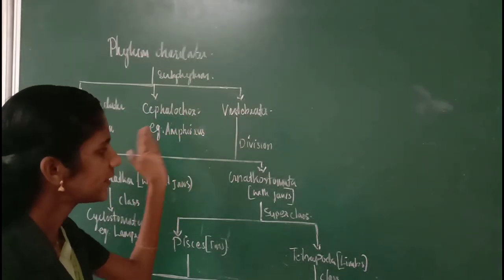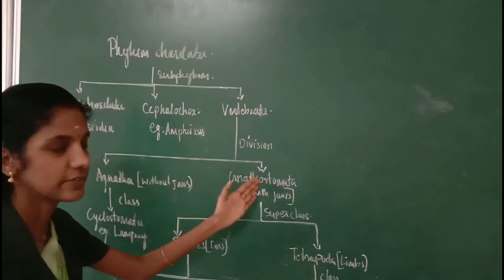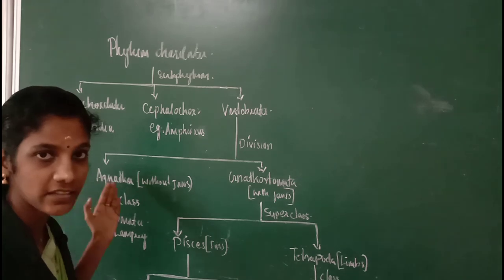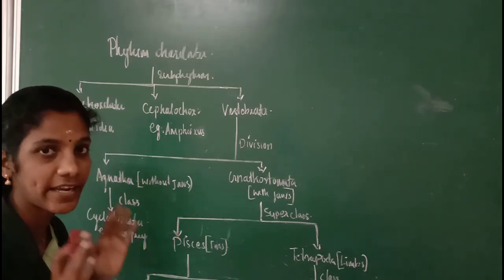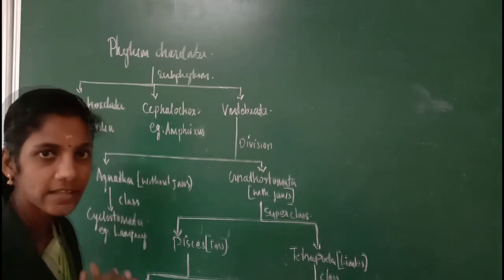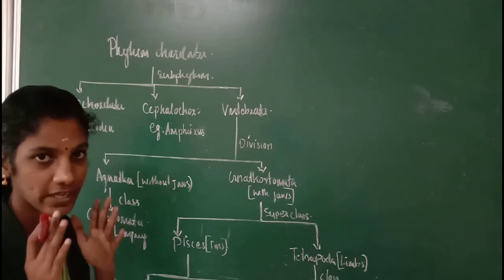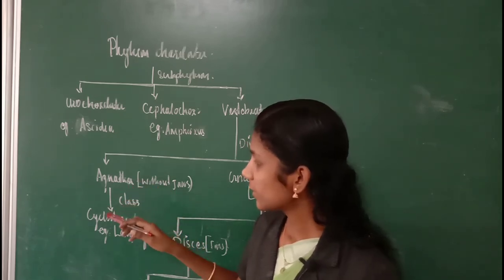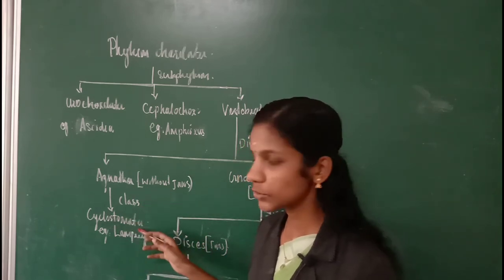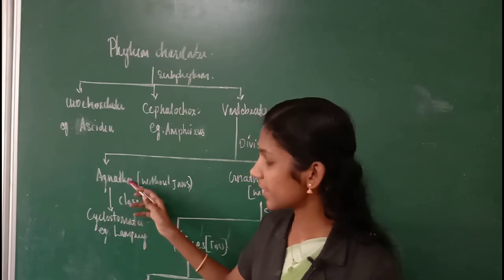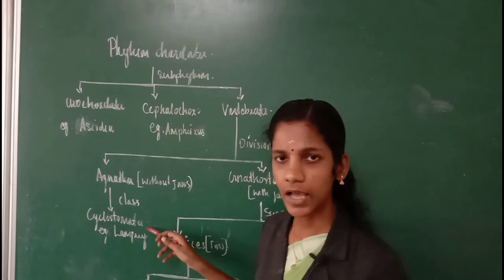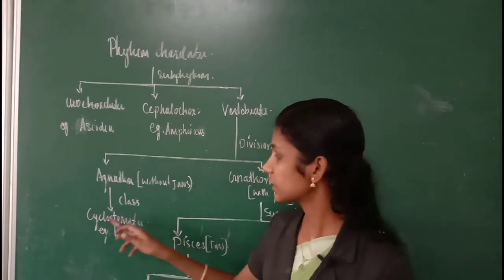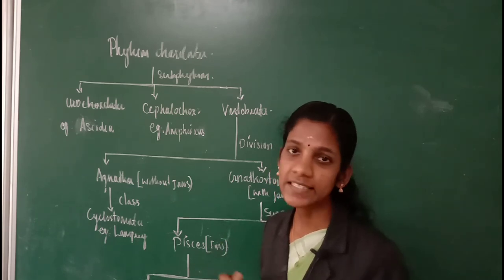Subphylum Vertebrata can be again divided into two main divisions: Division Agnatha and Division Gnathostomata. 'A' means absent, 'gnatha' means jaw — so Agnatha means absence of jaw. Agnatha contains animals, that is vertebrates, without jaws. On the basis of certain specific features, animals under Agnatha are grouped into a class called Cyclostomata.